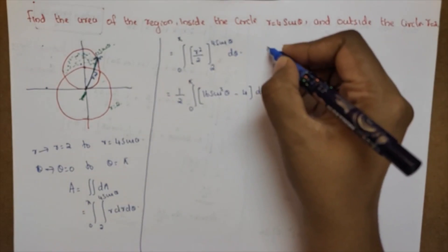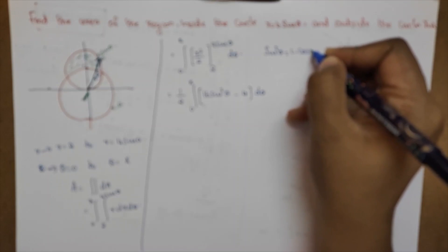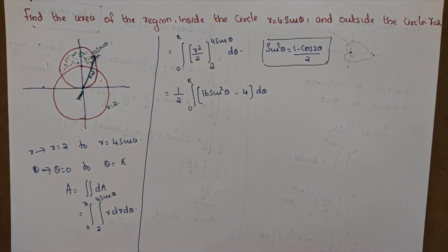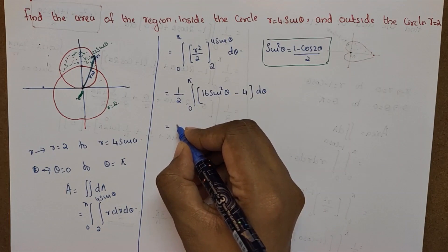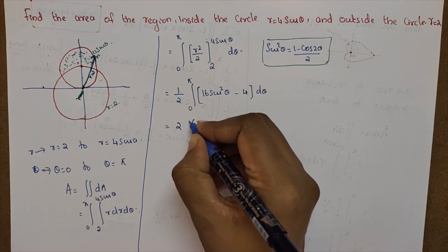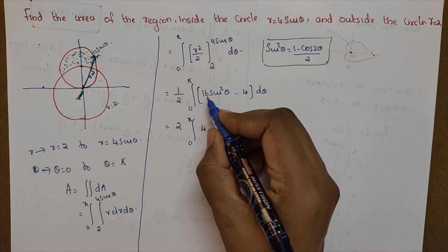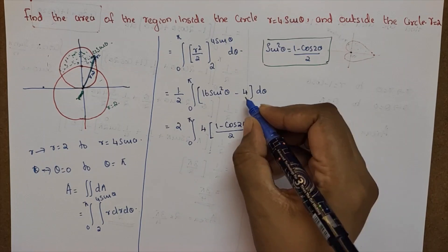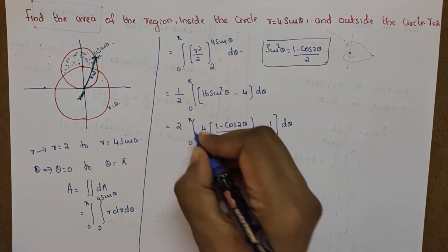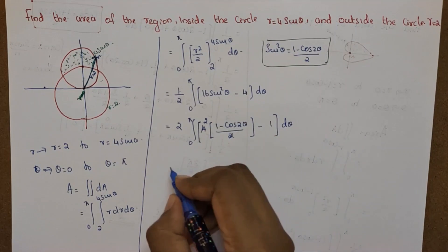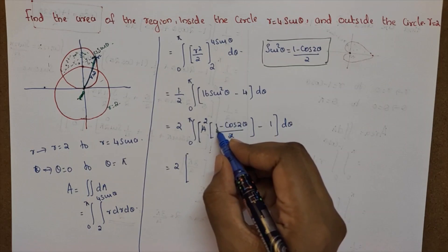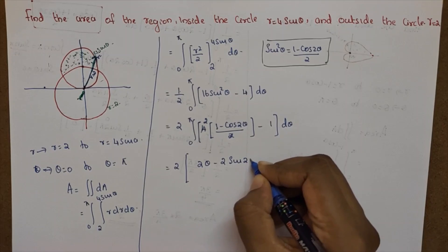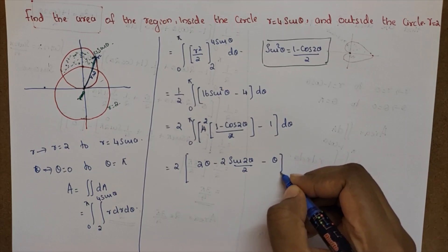We will use the formula: sin squared theta is equal to (1 minus cos 2 theta) by 2. So 16 sin squared theta becomes 16 times (1 minus cos 2 theta)/2. We get 2 into integral 0 to pi of (1 minus cos 2 theta) d theta, minus the constant term. Integrating: theta minus sin 2 theta by 2, with limit from 0 to pi.